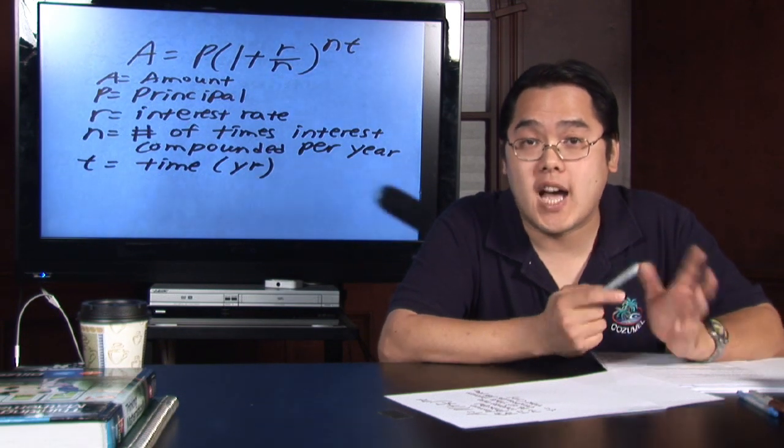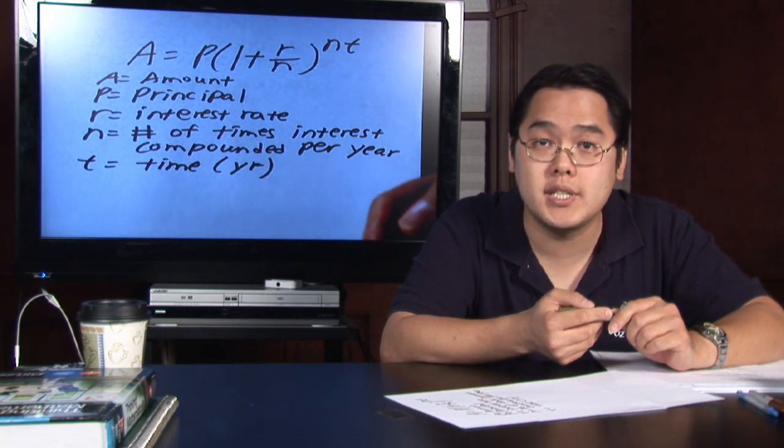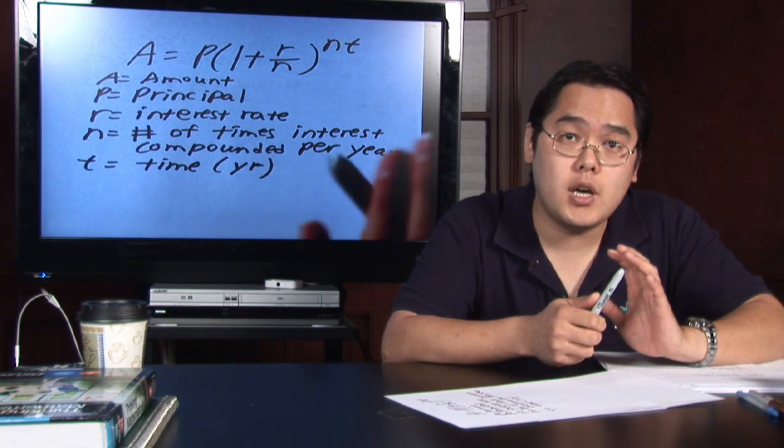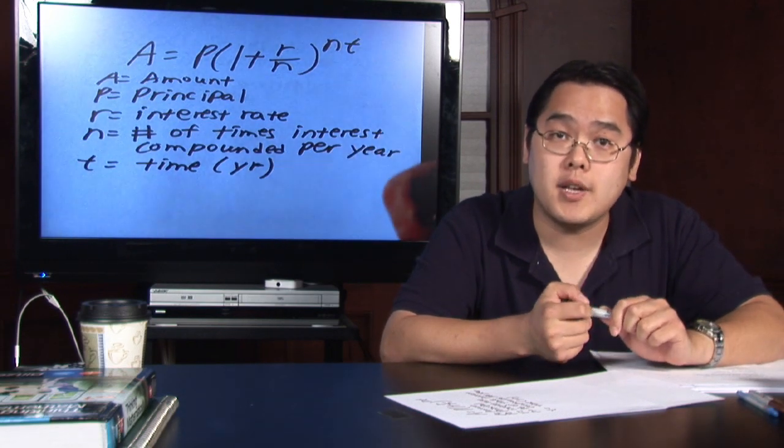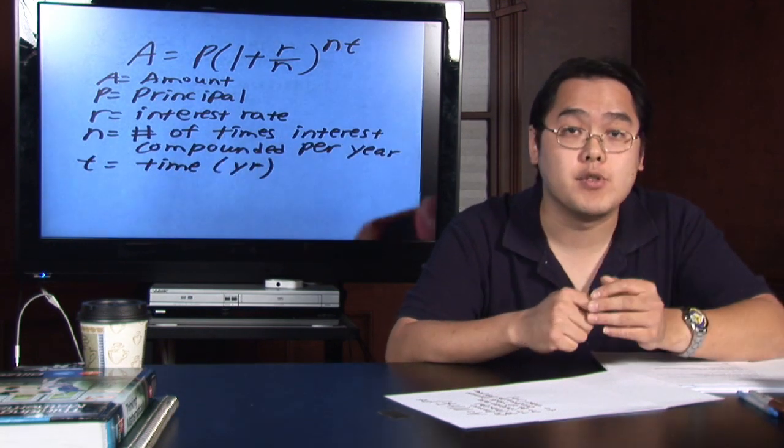Compound interest is a very complicated thing in that it uses a couple of formulas, but we're going to use the most commonplace formula today. Even though it is a little bit on the long side, it is a very practical thing in that it lets you figure out how much money you'll have at the end of a certain period in time.